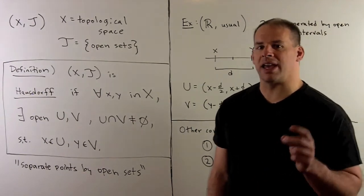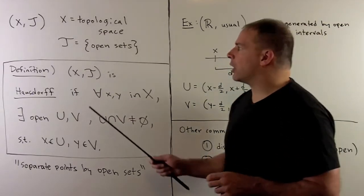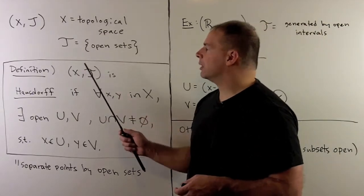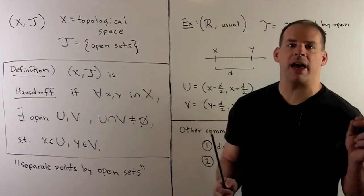Before we get to the example, let's recall the notion of a Hausdorff space. So I'll have a topological space (X,T), which will just be some collection of open subsets of X.